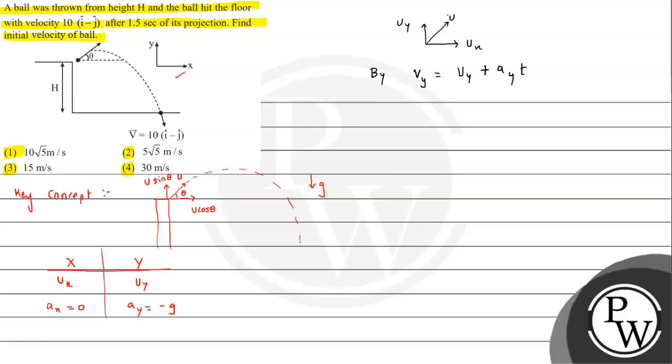V is 10i cap minus 10j cap. We can say minus 10j cap will be equal to u of y j cap plus ay, which is minus g into t.